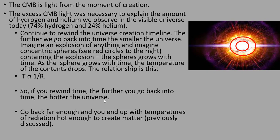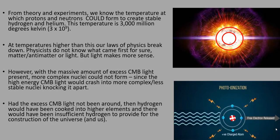So if you rewind time, the further you go back into time, the hotter the universe. Go back far enough and you end up with temperatures of radiation hot enough to create matter. From theory and experiments, we know the temperature at which protons and neutrons could combine to create stable hydrogen and helium. This temperature is 3,000 million degrees Kelvin. If temperatures higher than this, our laws of physics break down.